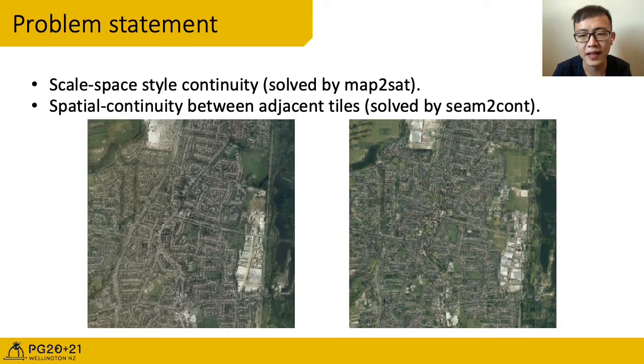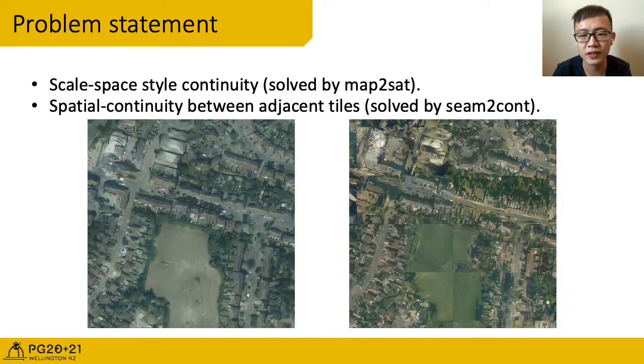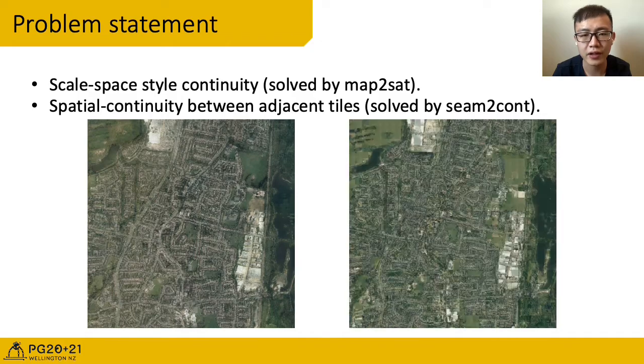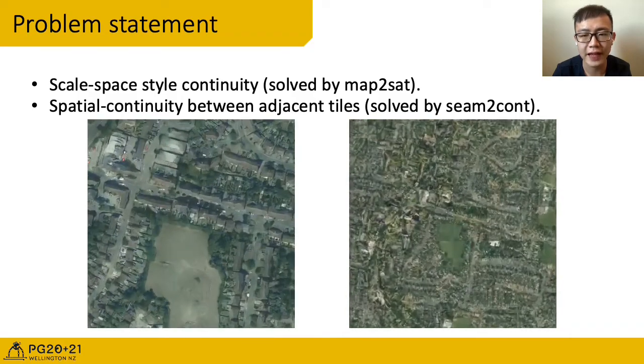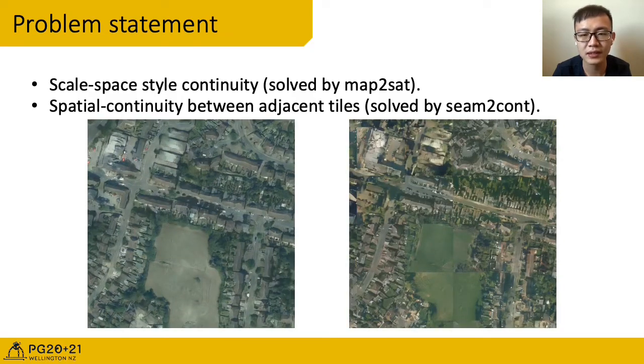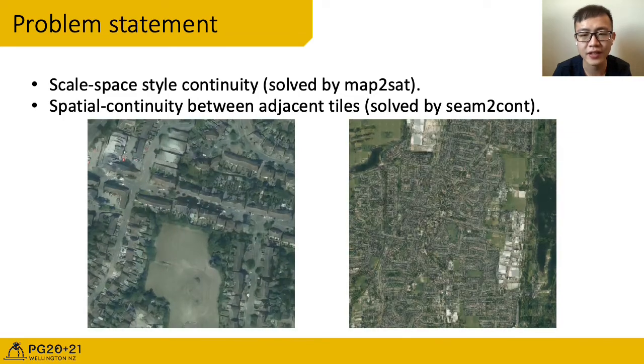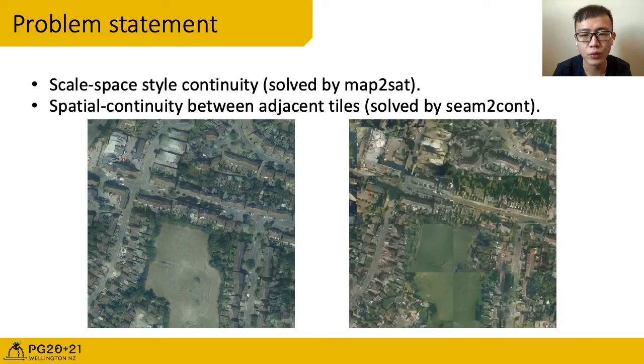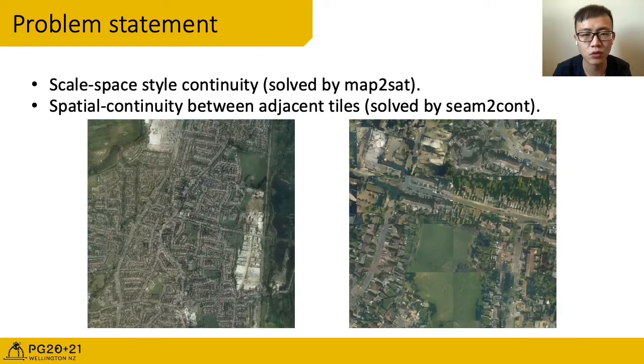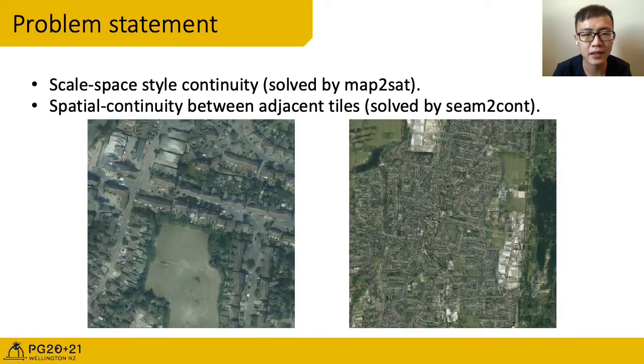The second problem is that simple tiling of the synthetic satellite images to cover a large area does not produce natural images, but creates an image with seams. If we just generate adjacent tiles and tile them up, it will end up looking like the right video. We have many seams.